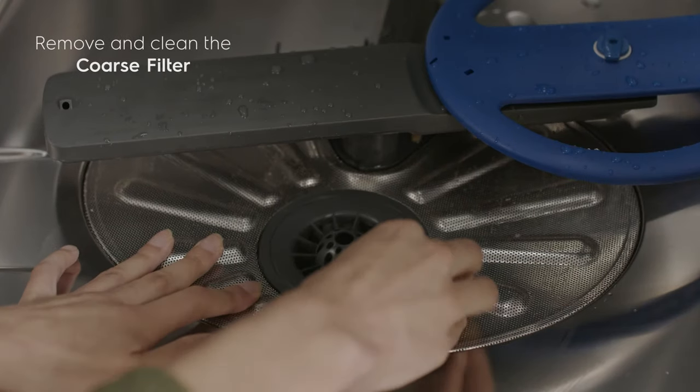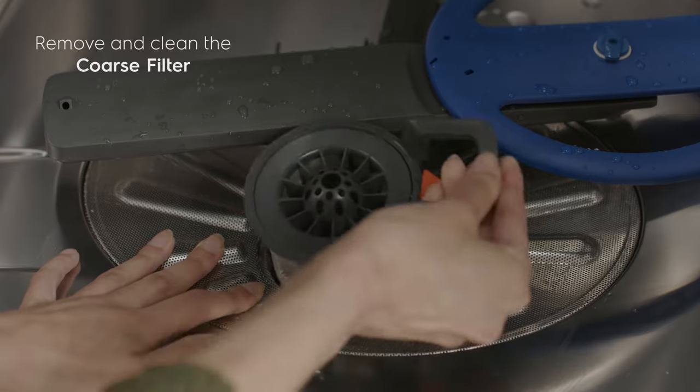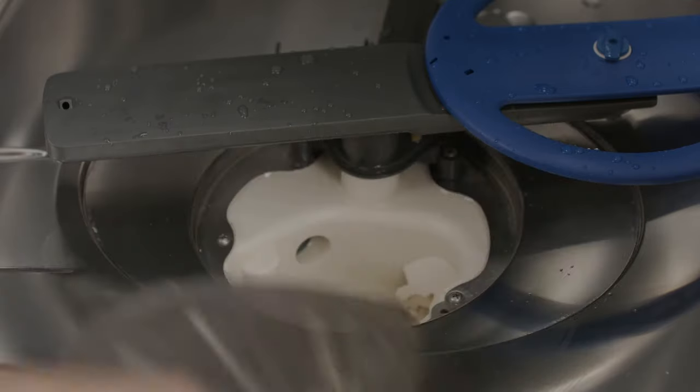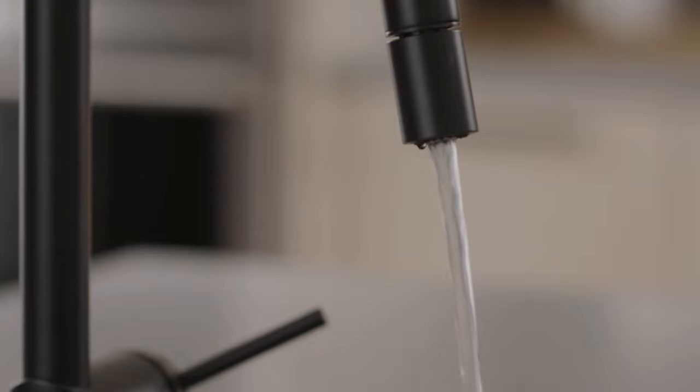To clean the coarse filter, take out the cylinder fine filter and remove the coarse filter from the dishwasher tub bottom. Rinse the filter by holding it under running water.